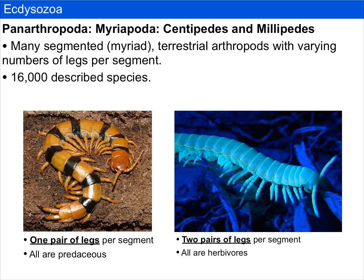Last are the myriapods, which include centipedes and millipedes. Myriapods are many-segmented — that's where they get their namesake, 'myriad' — and are almost exclusively terrestrial, with varying numbers of legs per segment. There are about 16,000 described species. Centipedes have one pair of legs per segment, are all predaceous, and have a modified head structure with a poison claw. Millipedes have two pairs of legs per segment most of the time and are all herbivorous.